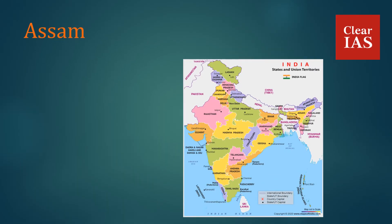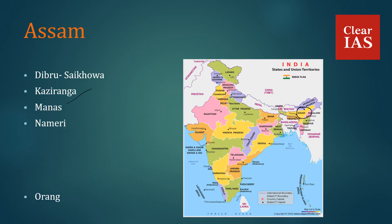In Assam, we have Dibru-Saikhowa National Park, Kaziranga National Park — which is famous for its one-horned rhinoceros — Manas, Nameri, Orang, Dehing Patkai National Park, and Raimona National Park.